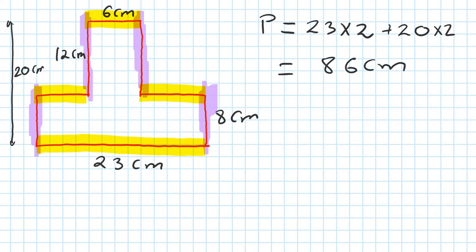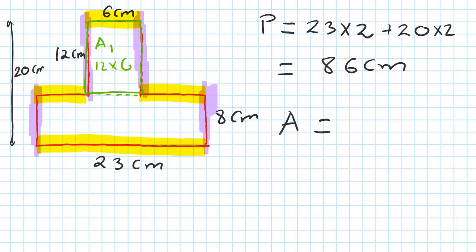Now to work out the area. I cut it into two pieces - easier. This one here, let's say area one. Area one - see, this is a rectangle. This one is 12 times 6. So area one is 12 times 6.